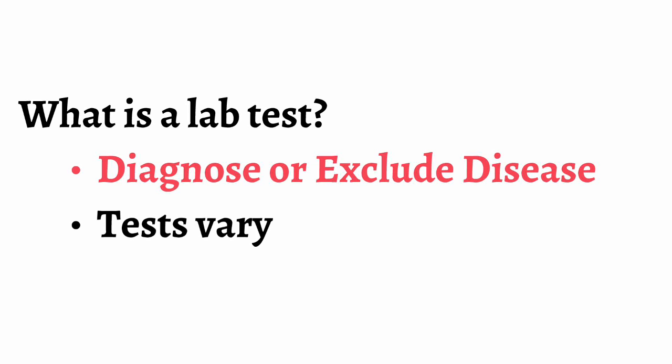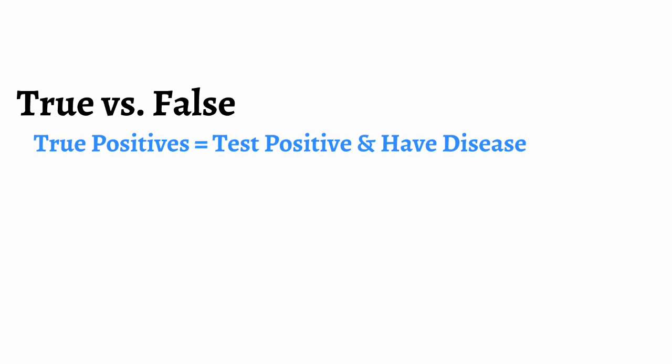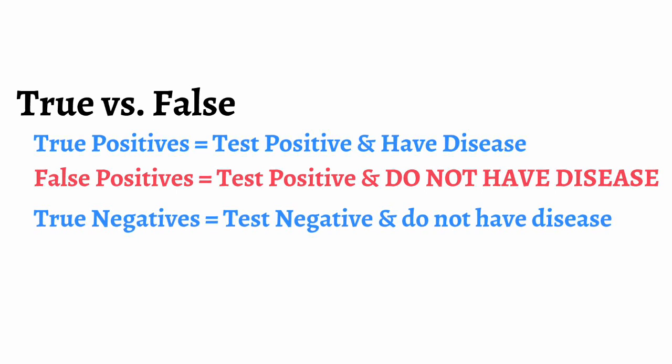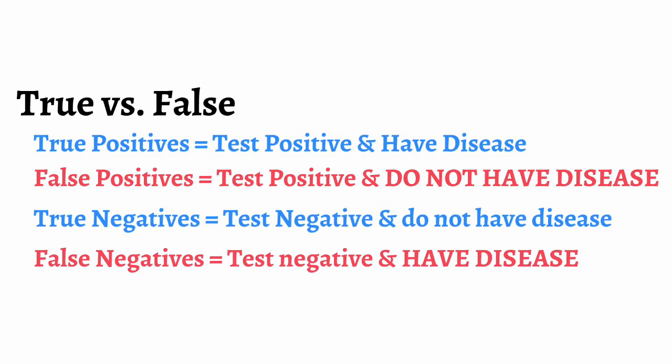To understand these terms, we need to understand what are true positives, false positives, true negatives, and false negatives. A true positive is when a lab test is positive and the person tested has the disease. A false positive is when someone tests positive but they do not have the disease. A true negative is when someone tests negative and does not have the disease. A false negative is someone who tests negative but actually has the disease.